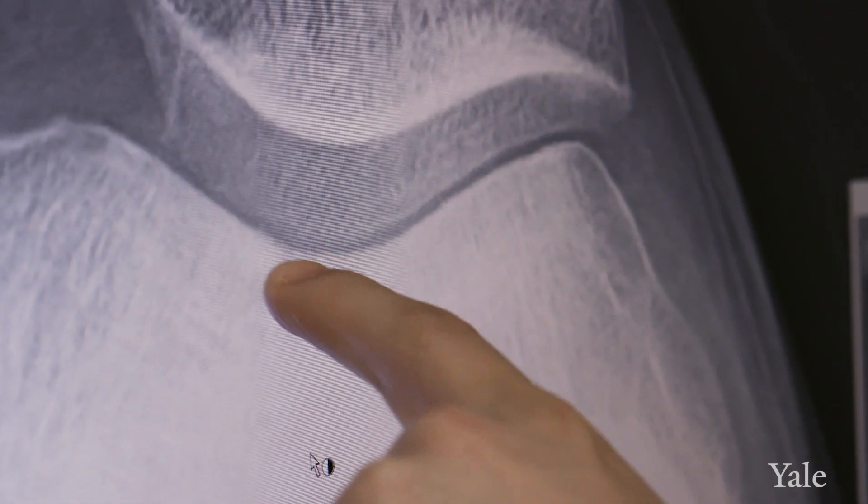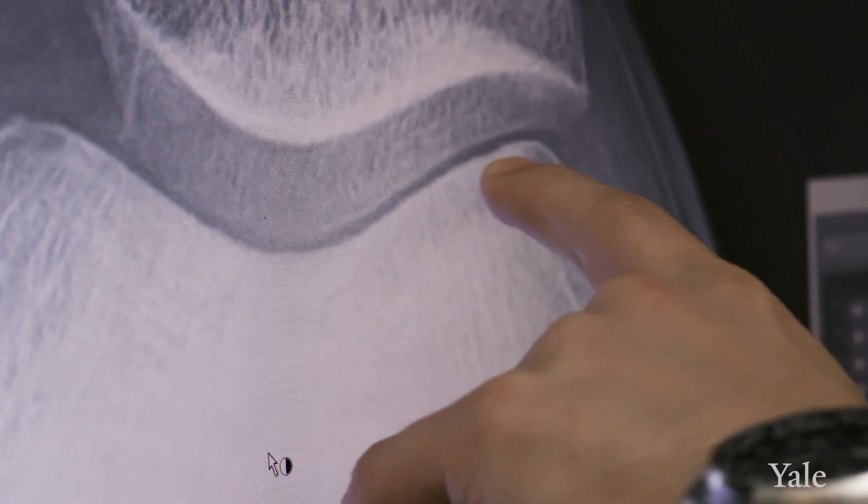In arthritis, that cartilage has become damaged or worn down. Unfortunately, we don't have a way to repair the cartilage. The cartilage has a very unique, complex architecture.